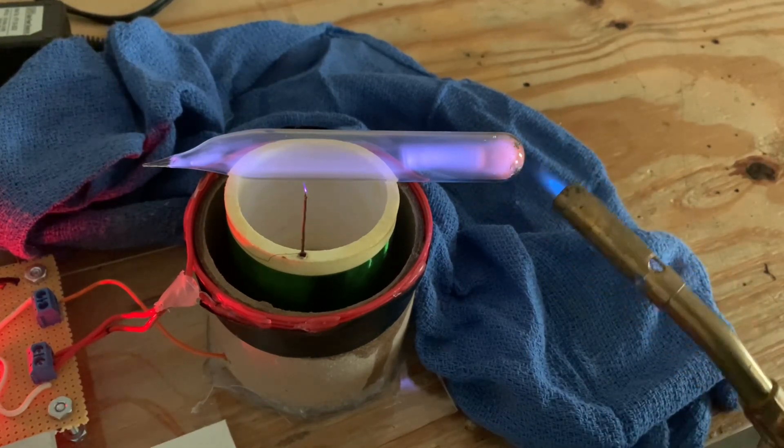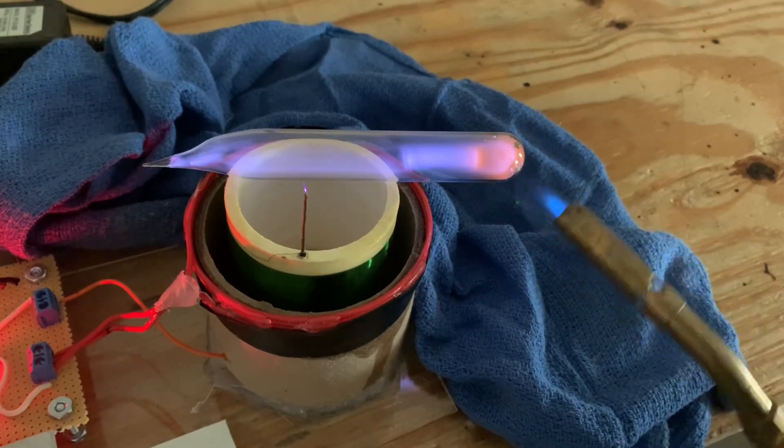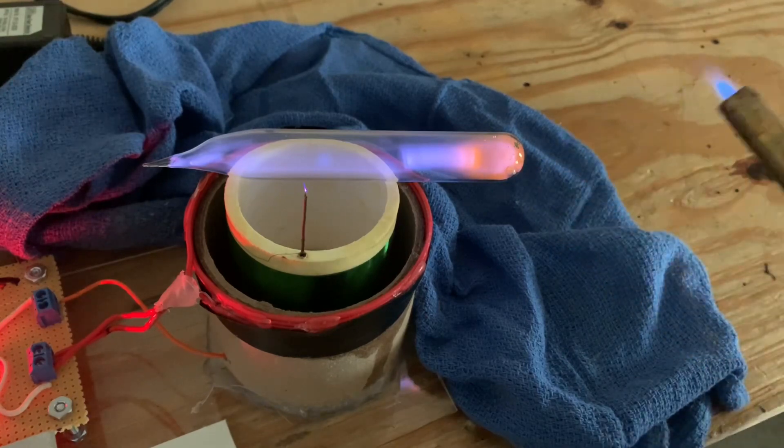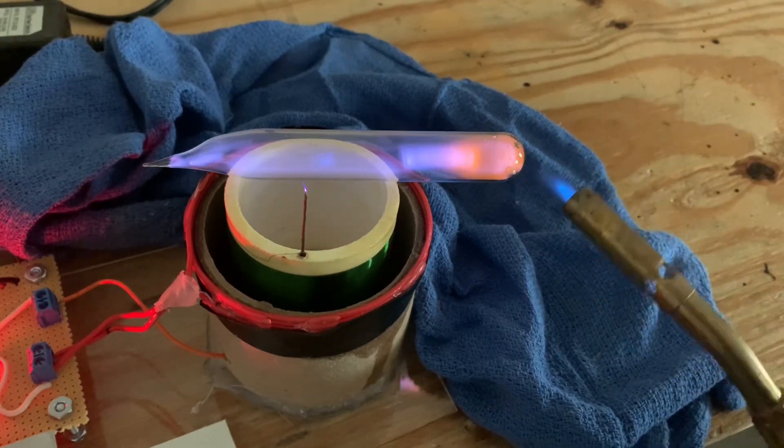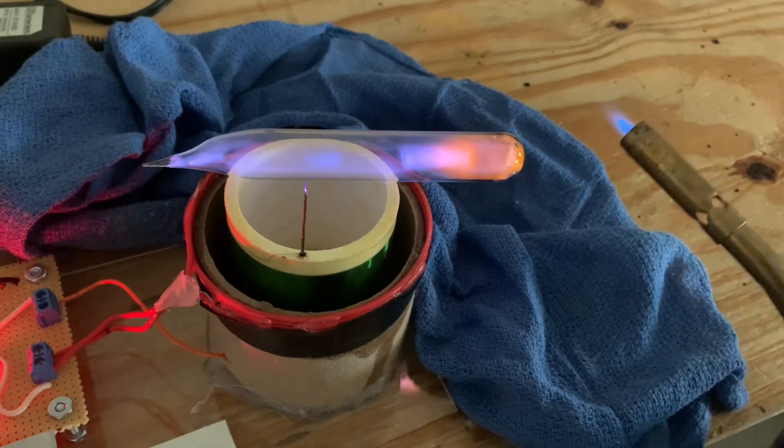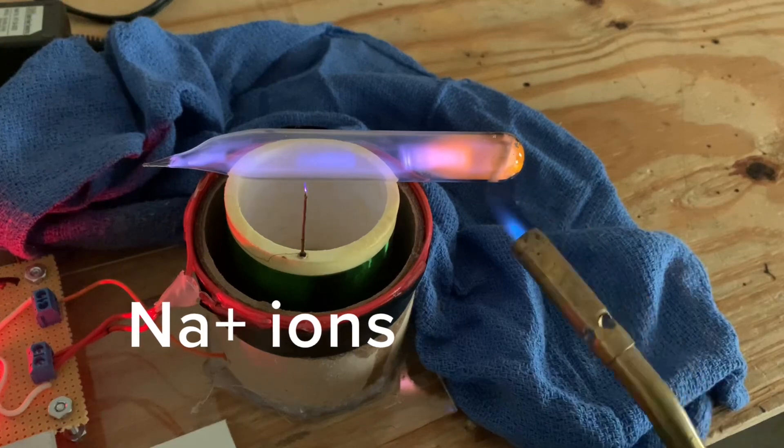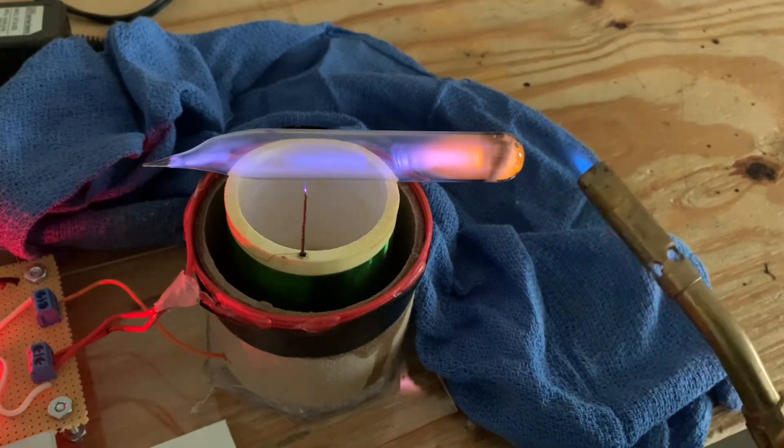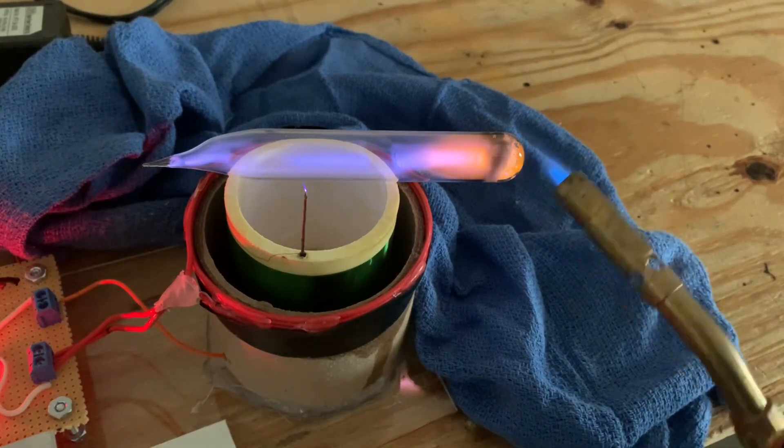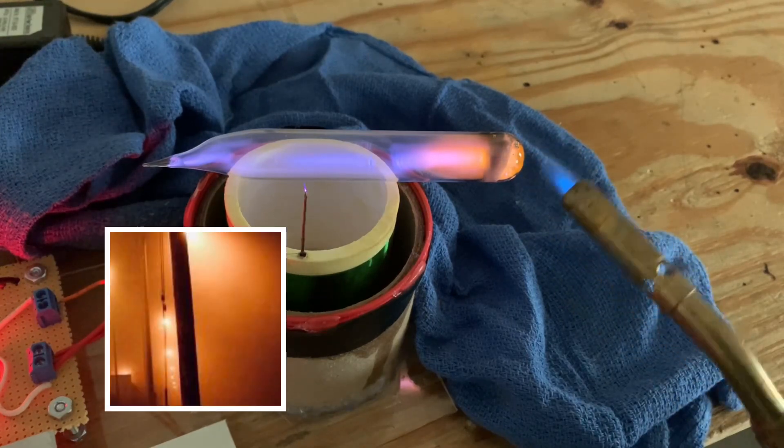So I'm adding some heat with this Bunsen burner and see what happens. The sodium metal ionizes into sodium plasma which is a beautiful monochromatic yellow orange color. You typically see that in street lights. These lights are very common in Europe, specifically England where I first got to see them.